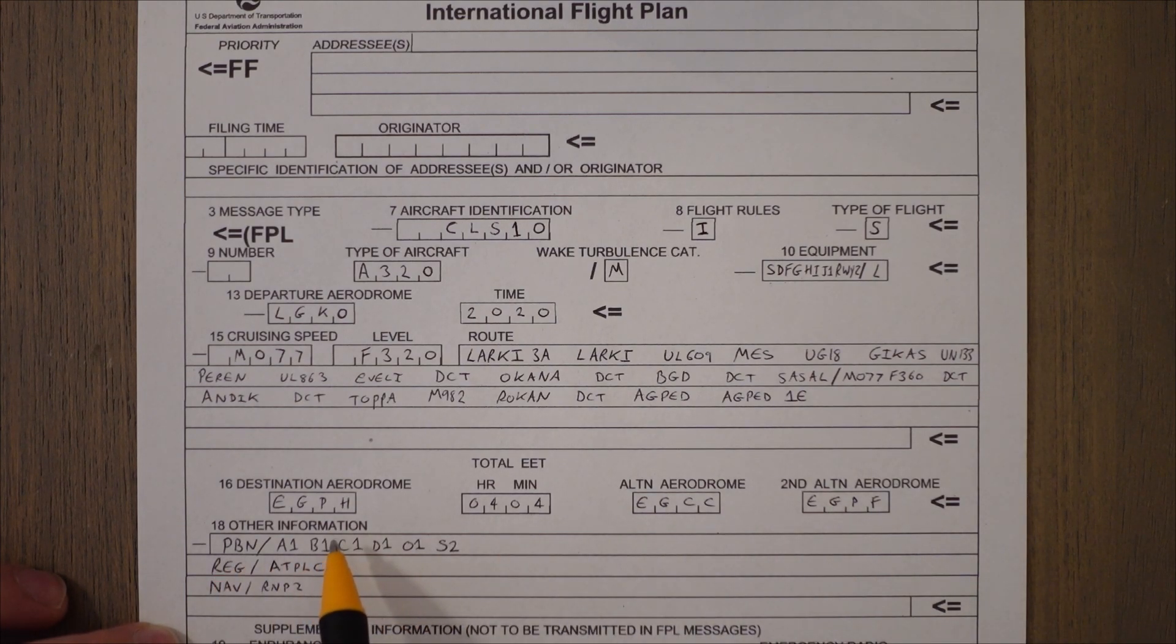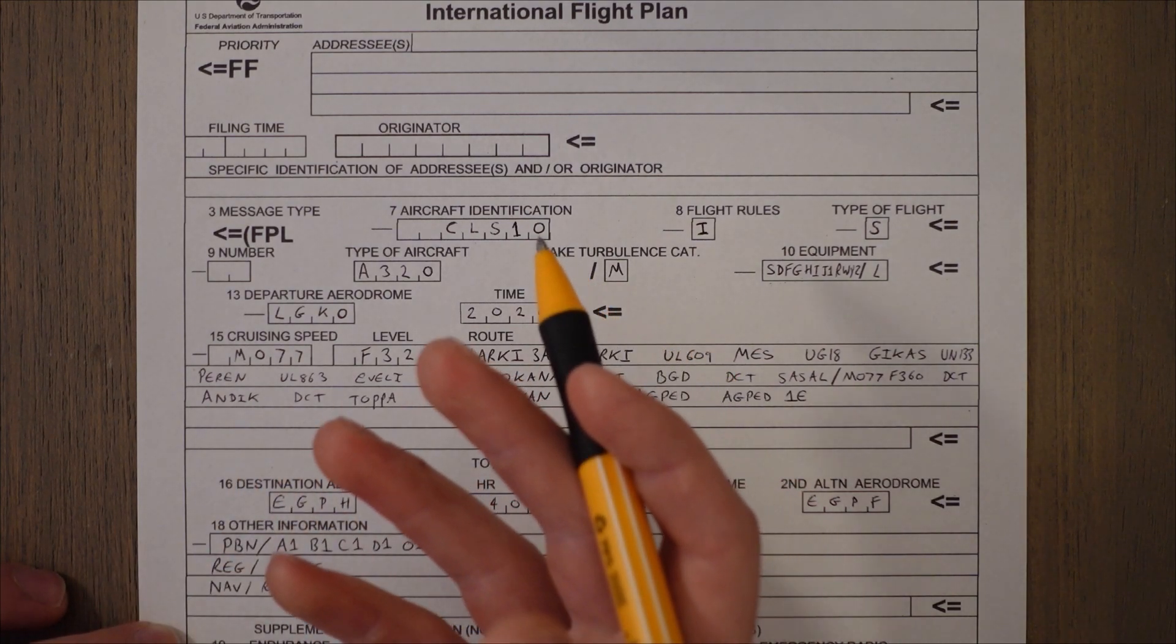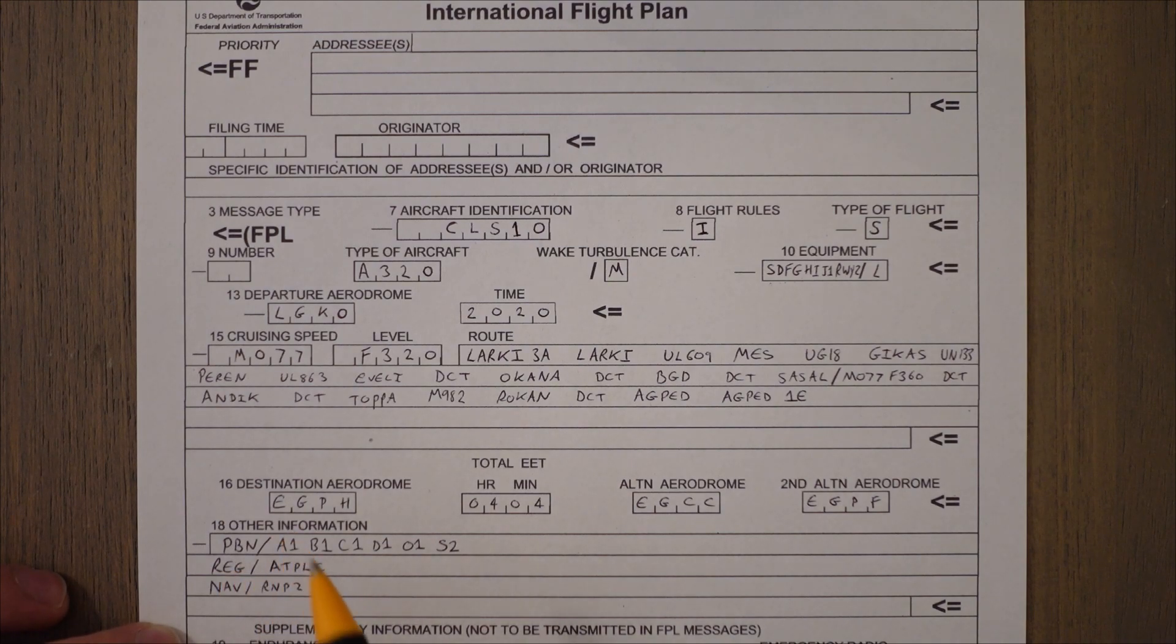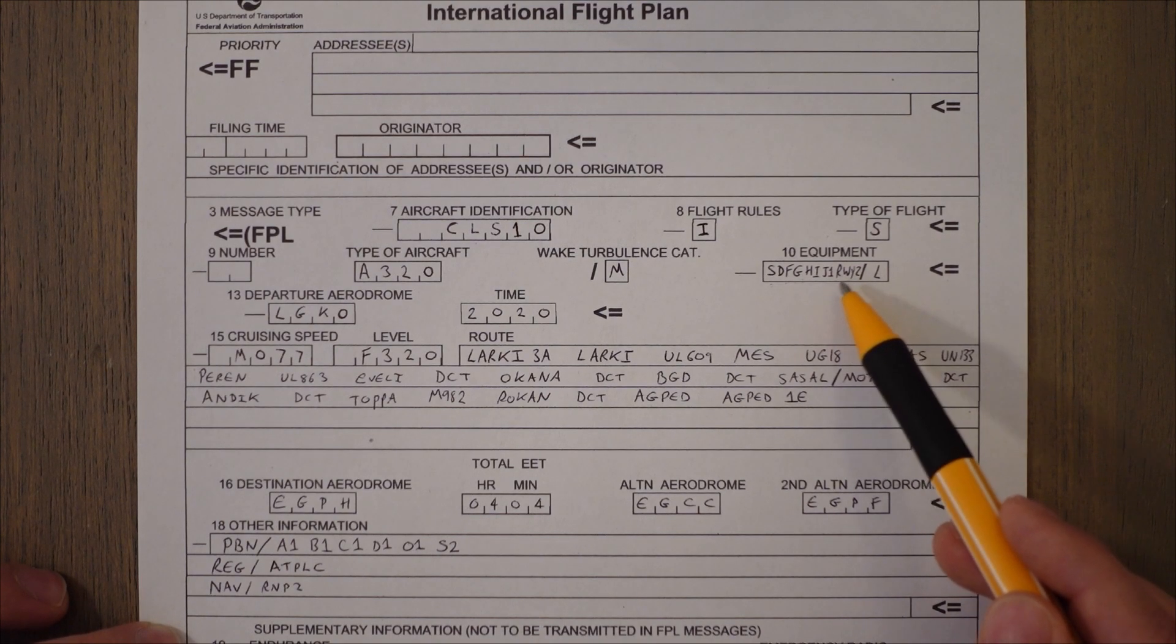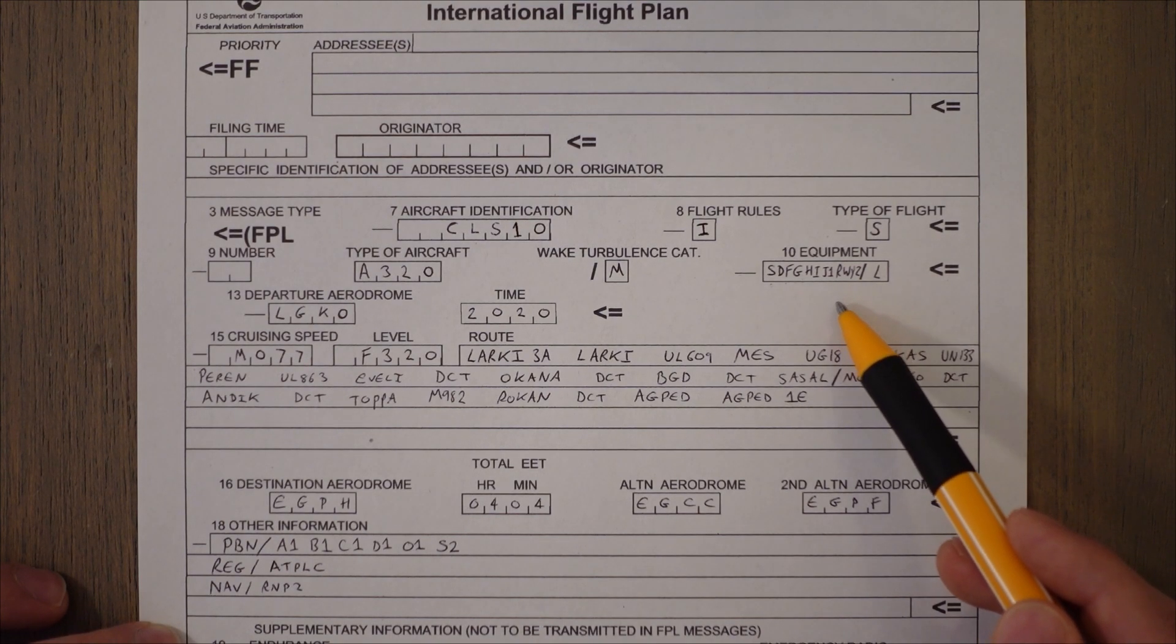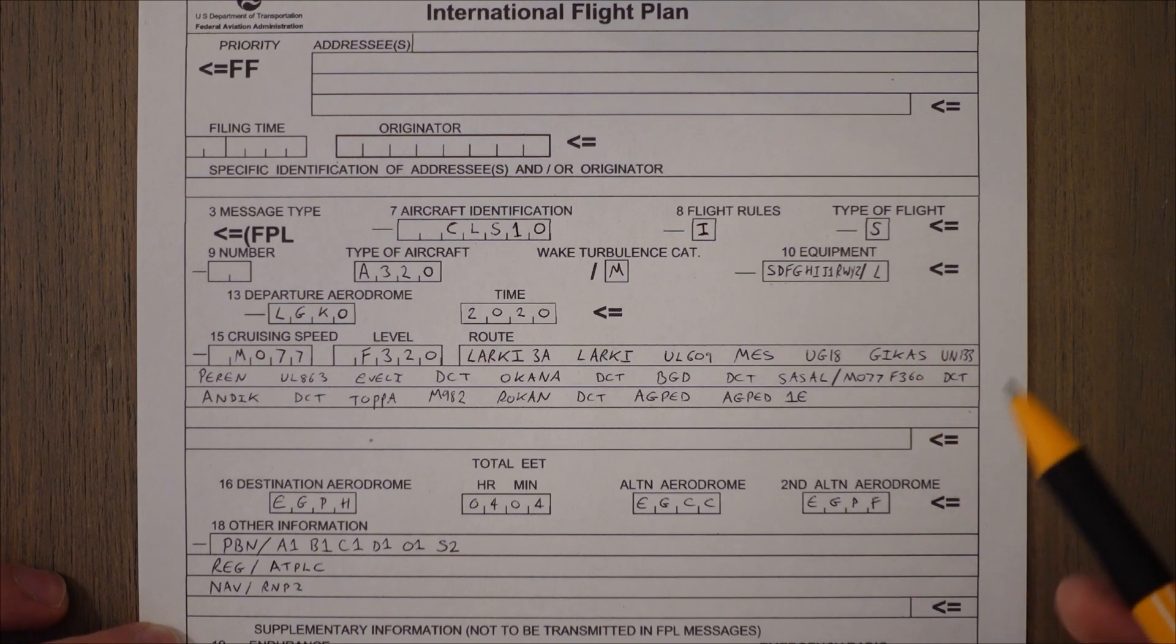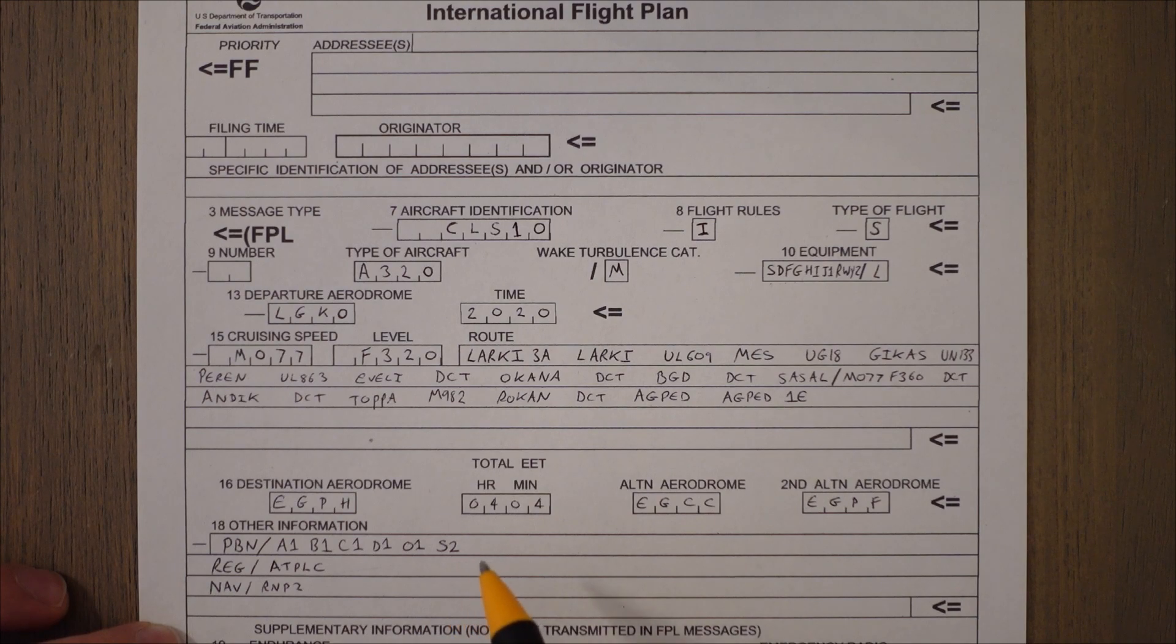And then in section 18 you add a lot of other information. This can be regarding loads of stuff. There's quite a lot of three letter preface codes that will indicate what we're talking about. So it could be COM for communications, NAV for any additional navigation, or in our case PBN indicates our PBN capability that we stipulated in equipment. We said we had R for PBN and then we said we're going to write more about it in section 18 with the letter Z indicated there.